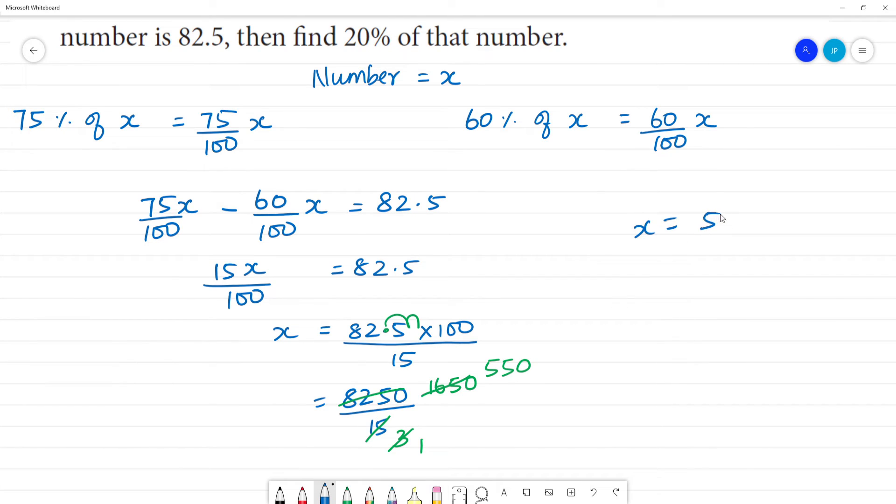So x equals 550. Next, we need to find 20% of this number. We calculate 20% of 550, which equals 20 by 100 into 550.